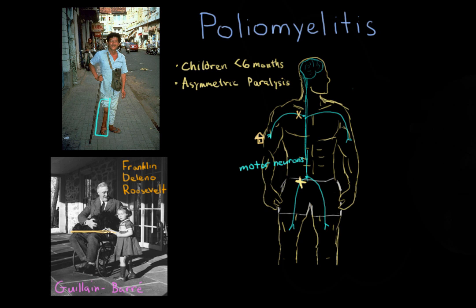How does polio infect a person — most likely a child under six months of age? The virus enters through the mouth and starts replicating in the throat, increasing in number. It can also travel down into the stomach and intestines and replicate there as well. Once the poliovirus has increased in number, it gets into the central nervous system and into the spinal cord — though we're not 100% sure how — where it can damage the motor neurons that provide energy to the muscles.